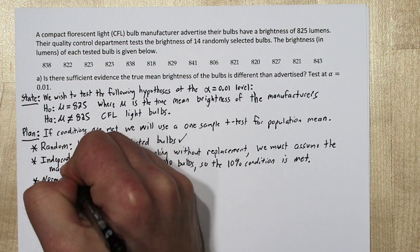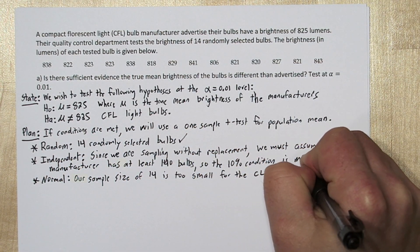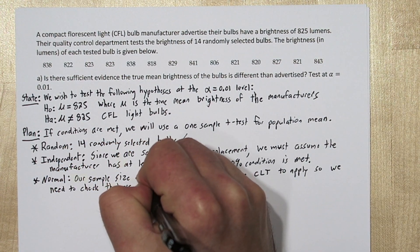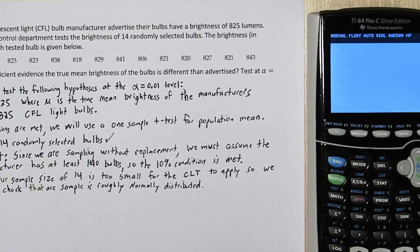For the normal condition, since our sample size is only 14, it's too small for the central limit theorem to apply. So we need to check that the sample is roughly normally distributed.